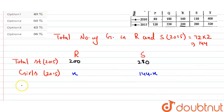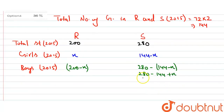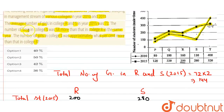Now for boys: boys in R = total students in R − girls in R = 200 − x. Boys in S = 280 − (144 + x) = 136 + x. So boys in R = 200 − x and boys in S = 136 + x.